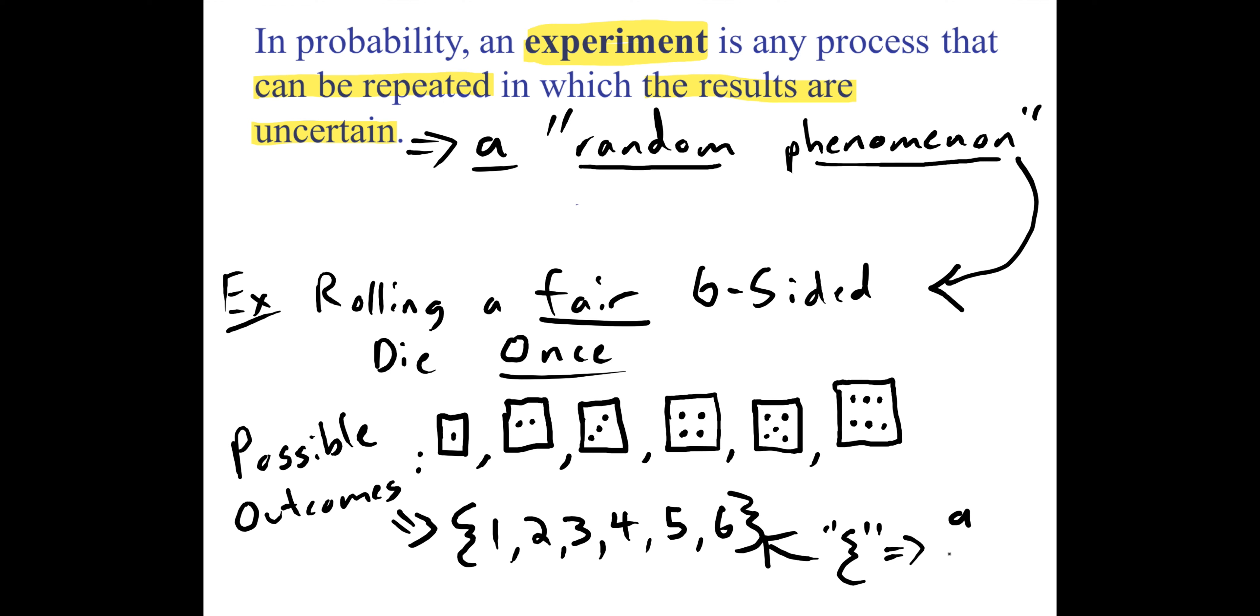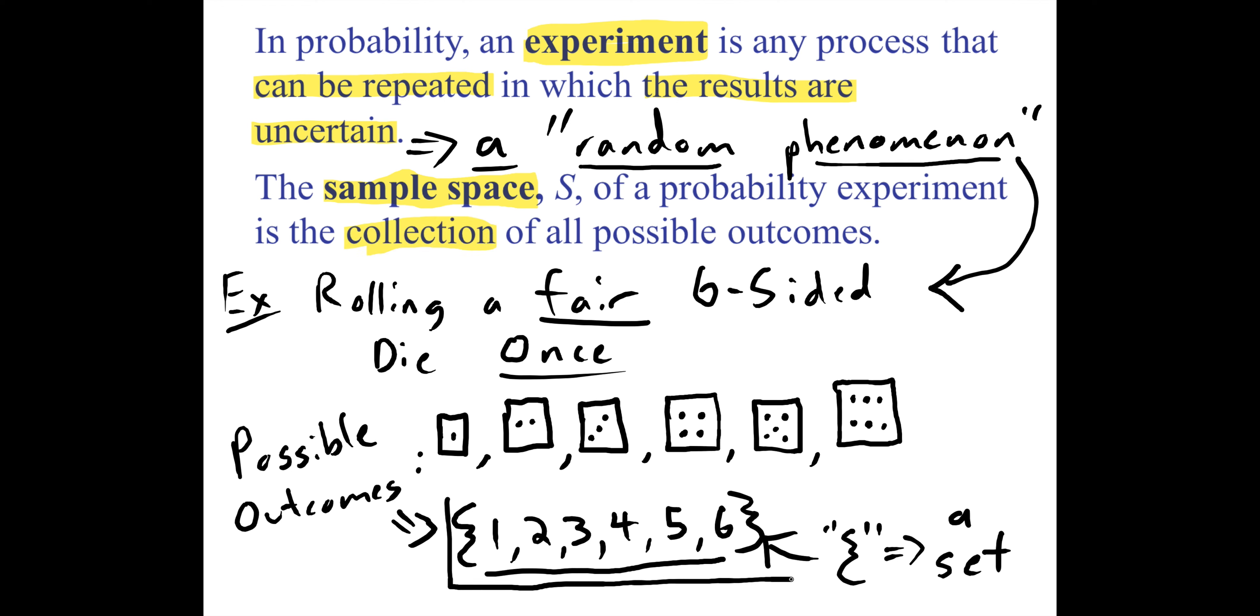We have a set of all the possible outcomes. There's six of them for this particular random phenomenon, and so we have a name for that. It is called the sample space. The sample space is a set or a collection—they both mean the same thing—of all the possible outcomes. Here is our sample space: the numbers one, two, three, four, five, six.